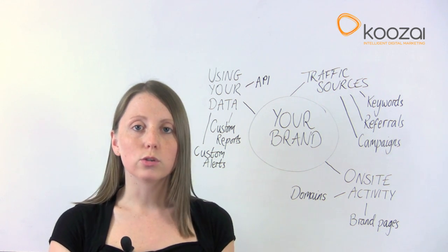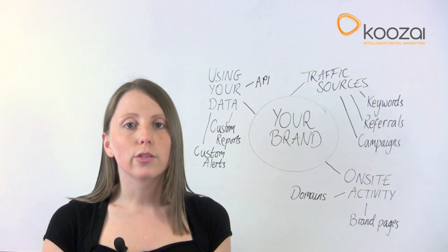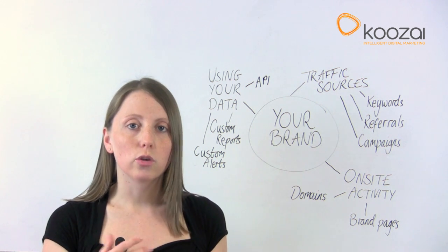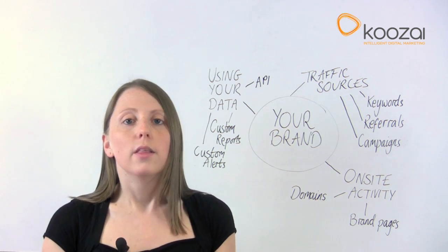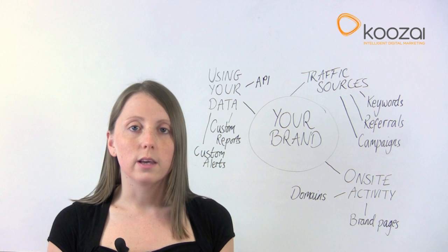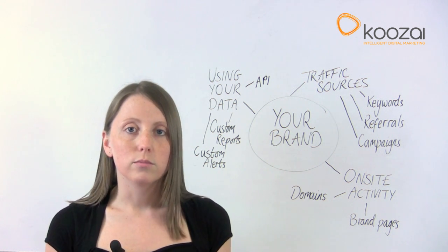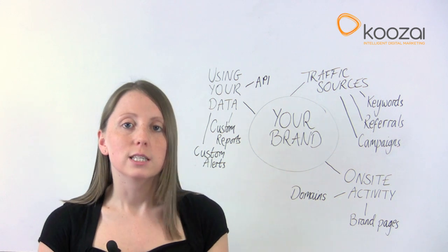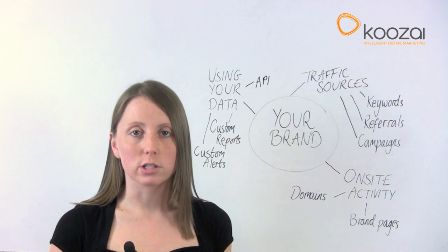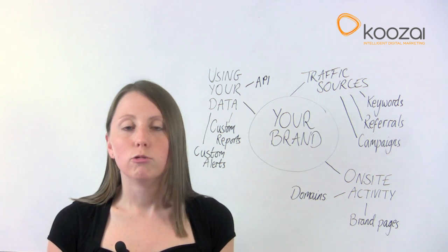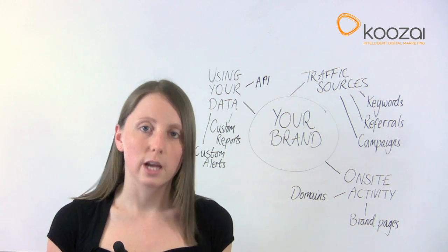I'd also recommend creating an opposite advanced segment so you can track your brand keywords versus your non-brand keywords. You can then track interaction with your site from paid search and organic search to see how brand versus non-brand vary across the site. Advanced segments are really useful because you can apply them to anything.